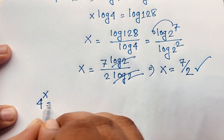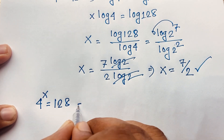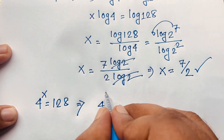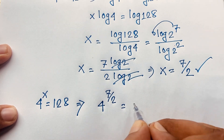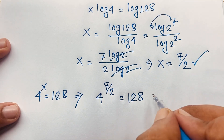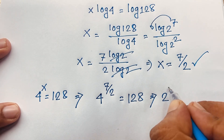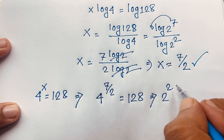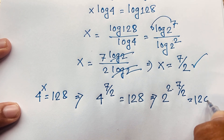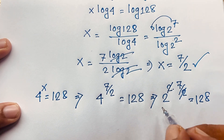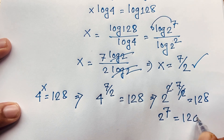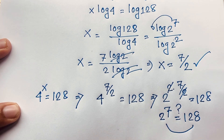Let's verify our answer. 4 to the power x, with x = 7/2, should equal 128. Since 4 = 2^2, we have (2^2)^(7/2). The 2 in the denominator and the exponent 2 cancel, giving us 2 to the power 7, which equals 128. Left-hand side equals right-hand side.